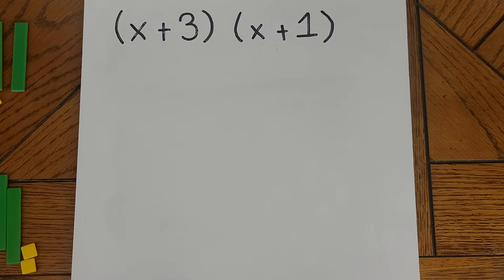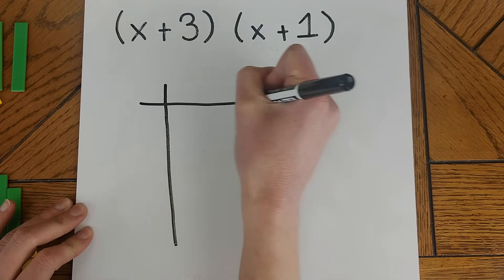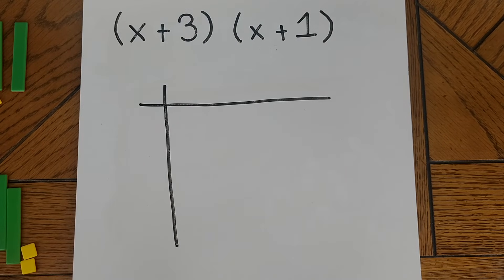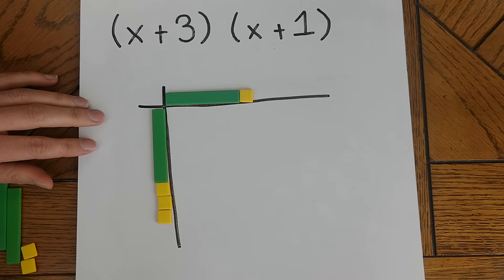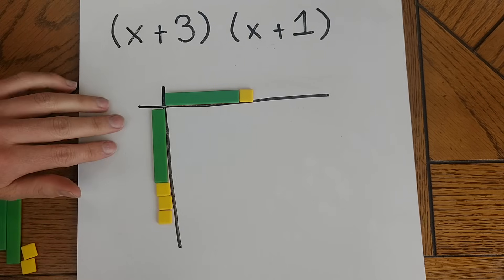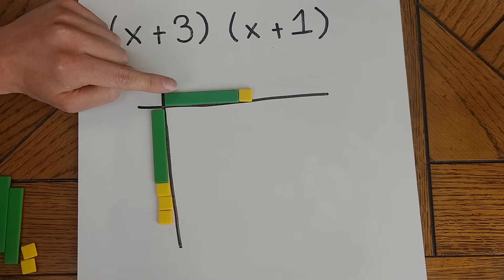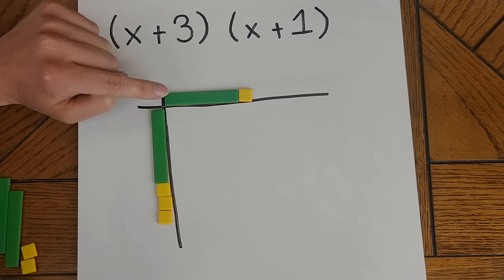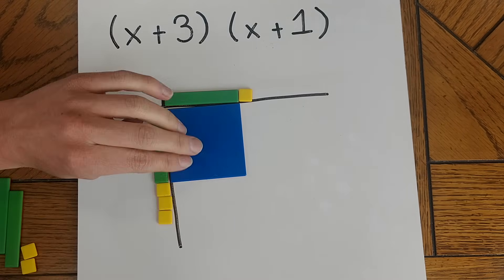My personal favorite way to use algebra tiles is as a method for multiplying binomials. To do this, you're going to want your students to draw what's called a t-chart. Then take each of these binomials and model them on each line of the t-chart. We know that to multiply binomials, we need to take each term in the first binomial and multiply it by each term in the second binomial. I'm going to start with the first tile on the horizontal line — this x tile — and multiply it by each of the tiles on the vertical line moving down. So x times x gives me x squared, and you'll notice that this x squared tile fits very neatly in its place on the t-chart.